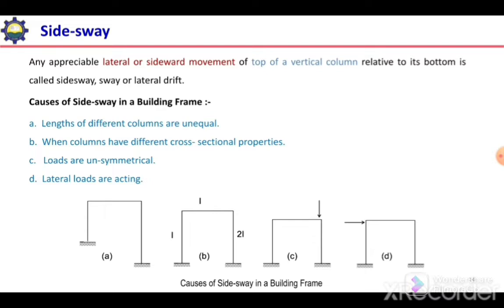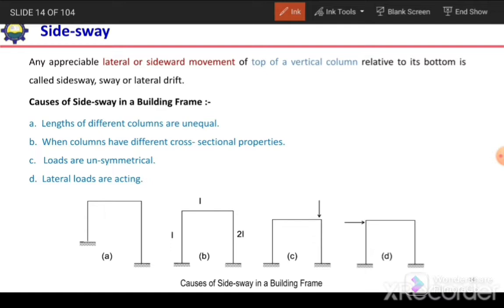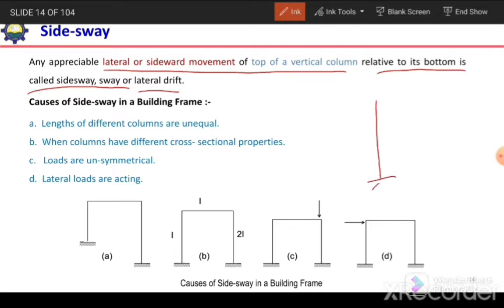What is side sway? Any appreciable lateral or sideward movement of the top of a vertical column relative to its bottom is called side sway or lateral drift. For example, if a column bends symmetrically under load, there is no side sway. But if its top moves in the horizontal direction due to applied load, that is termed as side sway or drift.